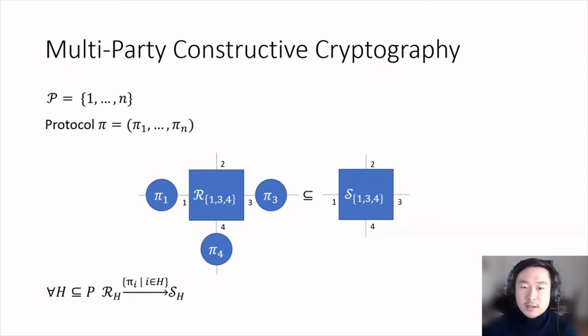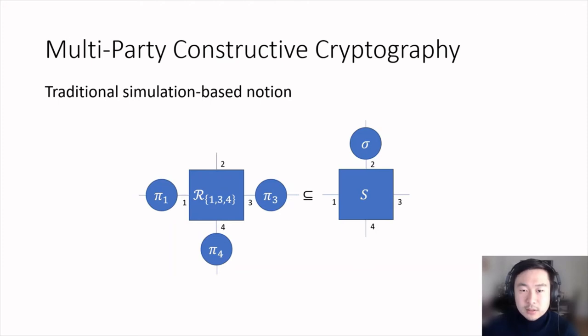A special case often considered in the literature is where one provides guarantees only if the set of dishonest parties is within a so-called adversary structure. For example, if the set of corrupted parties has size at most T. This simply means that for those sets that have too many dishonest parties, there is no guarantee, or equivalently, the resource is only known to satisfy the trivial specification phi.